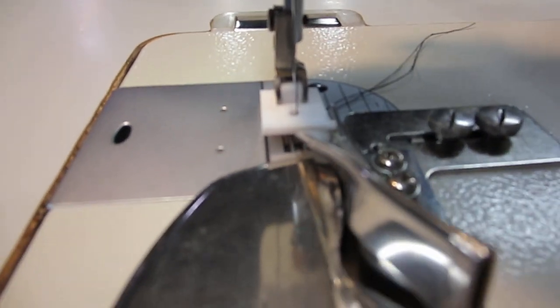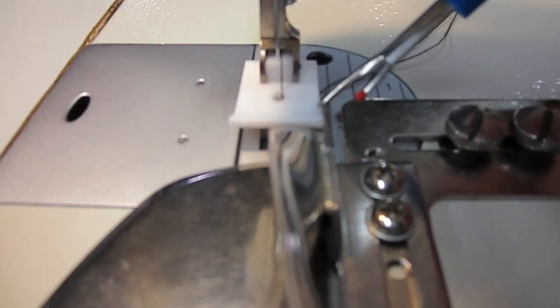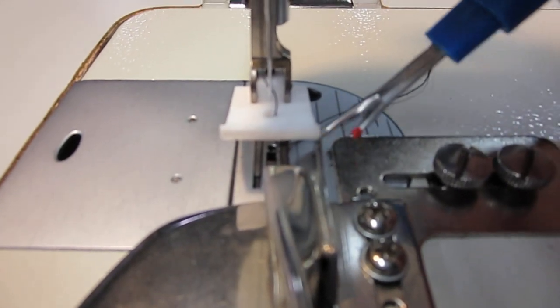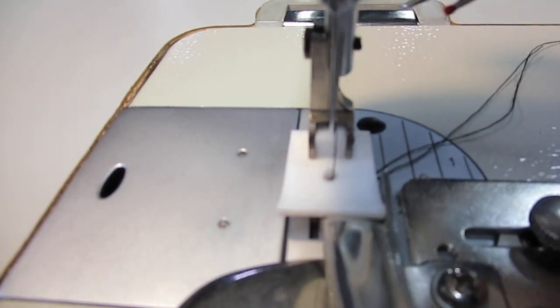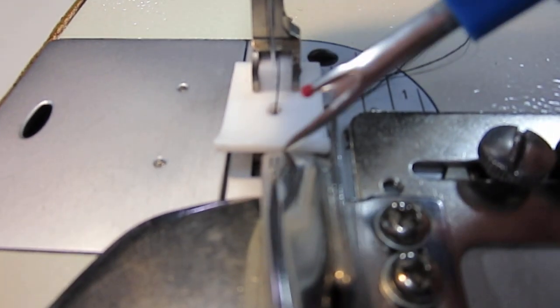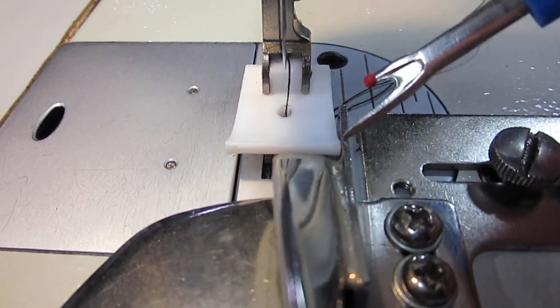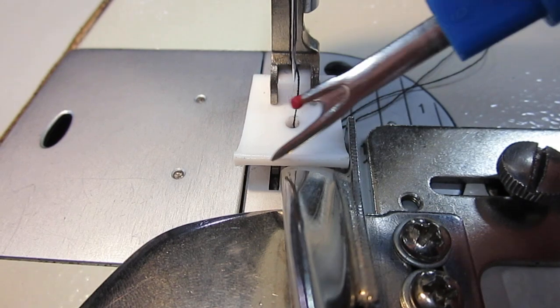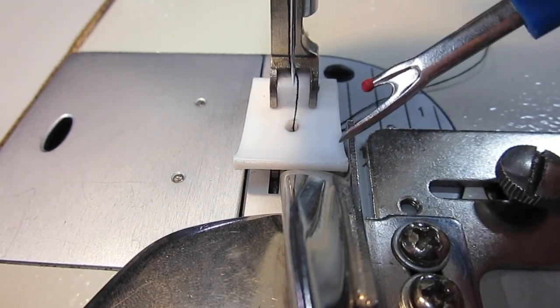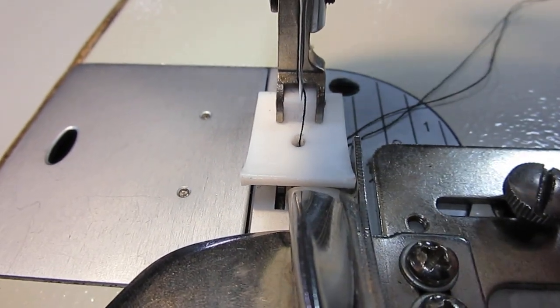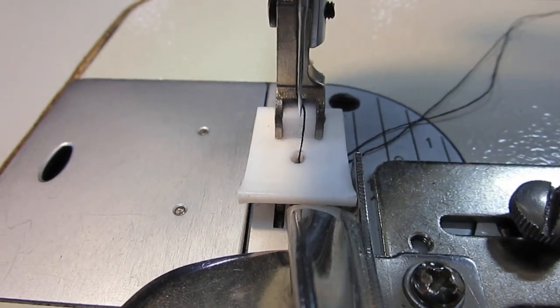You'll see that my foot is right up against the edge of the attachment. The front of the foot, there's very little room. It's almost right up against. You see how this foot fills the entire space? That is going to keep your grosgrain ribbon from walking to one side or the other.